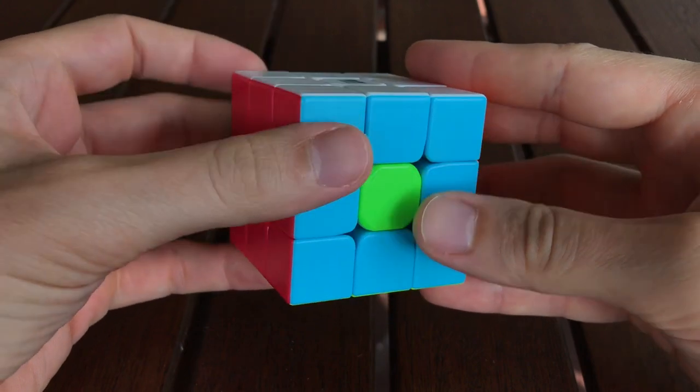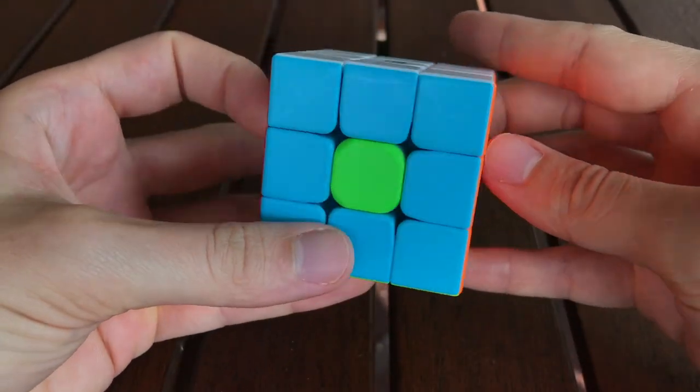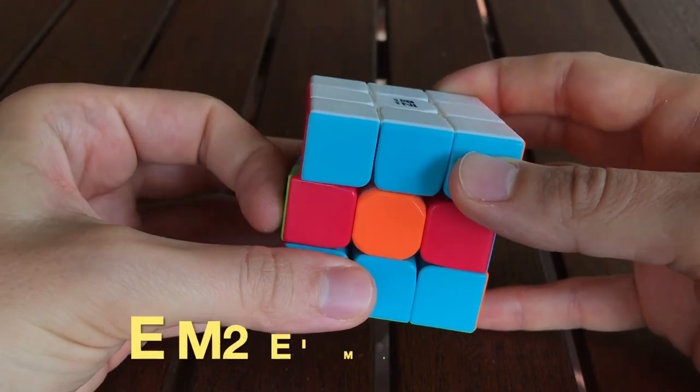You can see that the red and orange centers have switched with each other, and the blue and green centers have switched with each other, but the white and yellow faces stay the same.